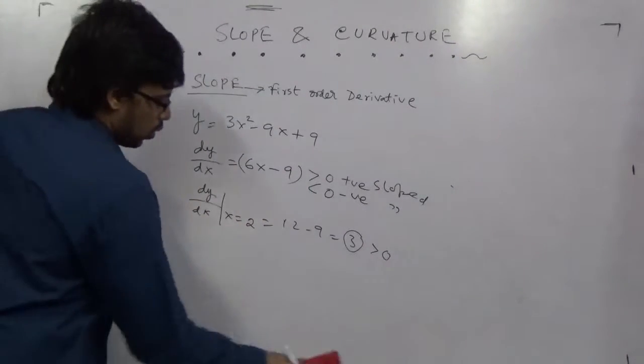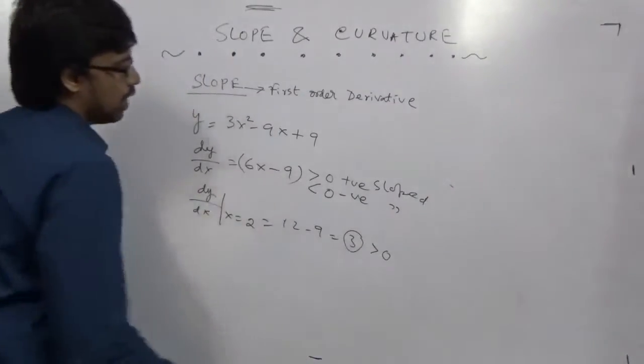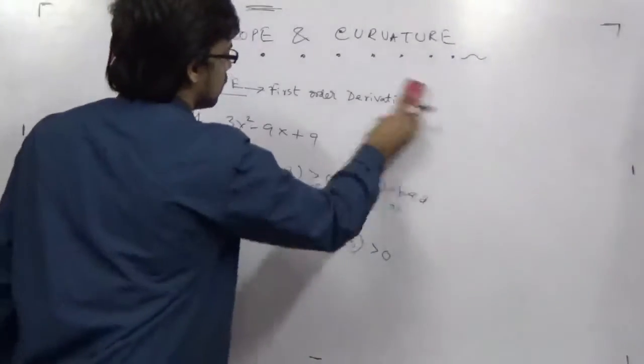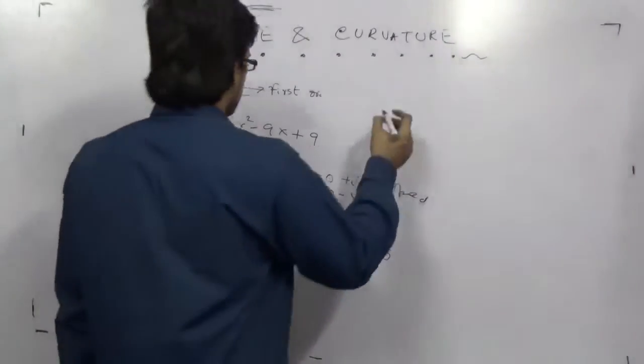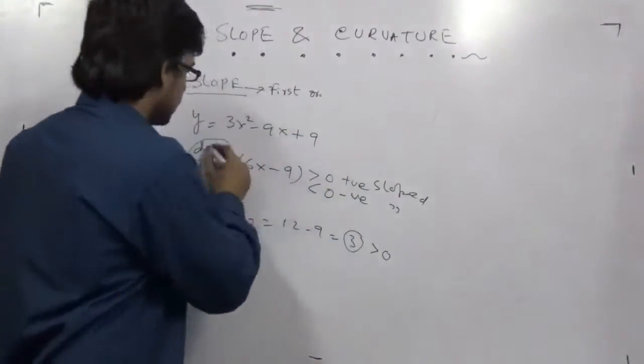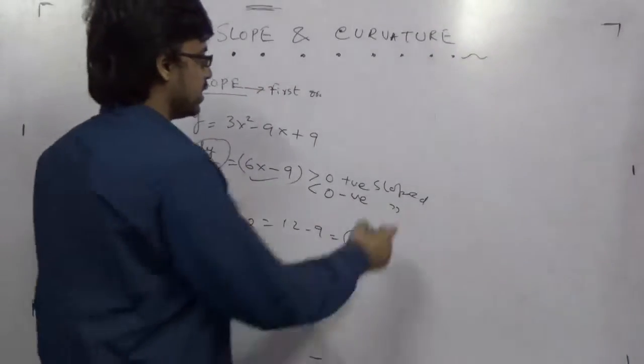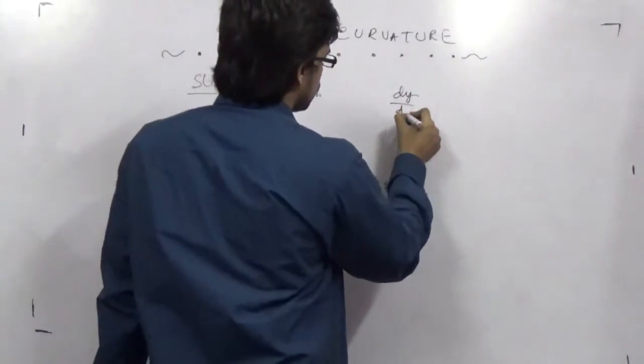Now what happens in the case of curvature? Curvature is nothing but the second order derivative. For example, here we have dy/dx = 6x - 9. So now we are going to find d²y/dx².